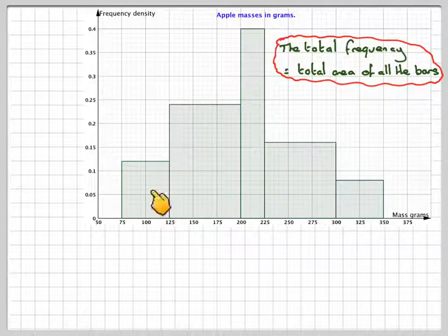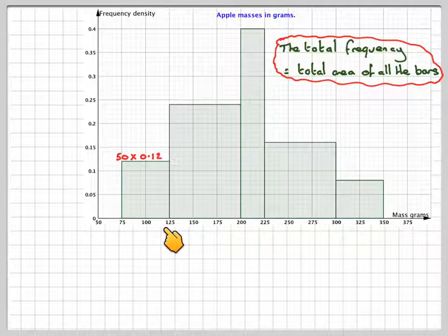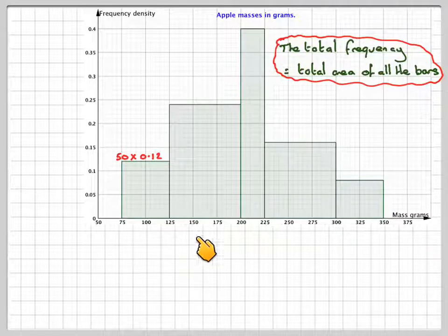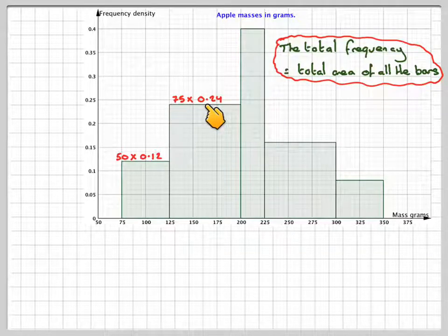Working each one of these out, that's going to be 50 times 0.12, 50 because the class width is 50, and this length here is 0.12. Doing a similar sort of thing here, this is going to be 75 times 0.24.